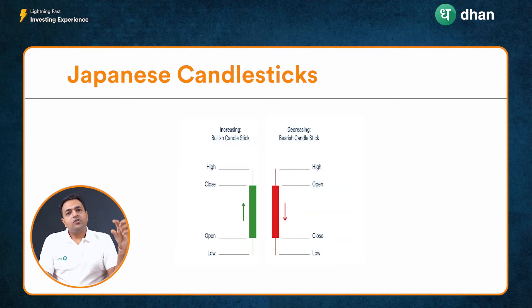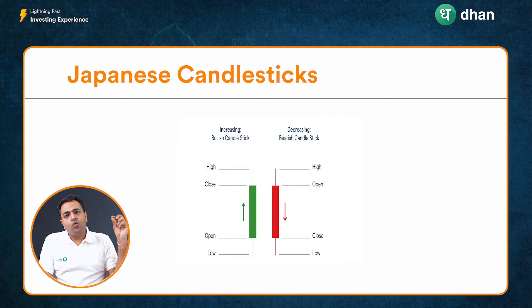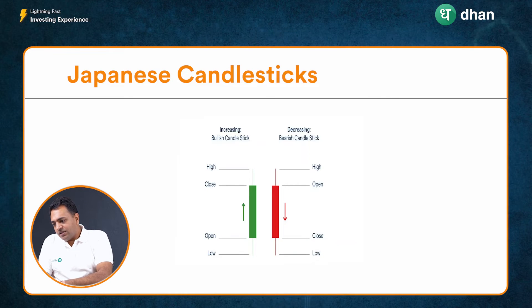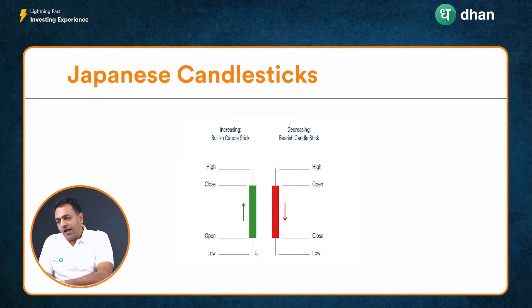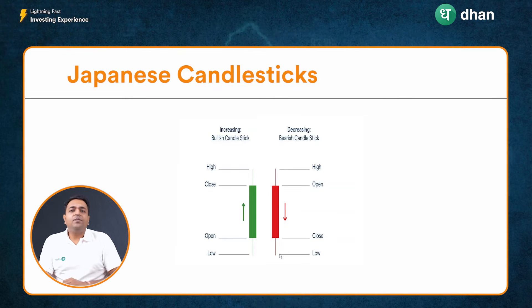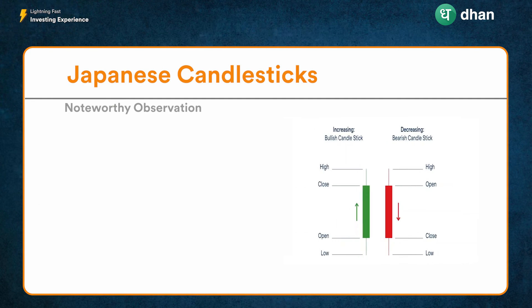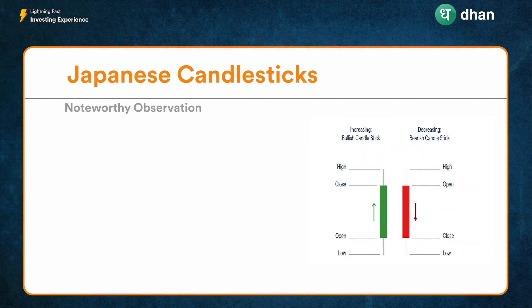Each candle, whether green or red, is accompanied by a wick on the top and a wick on the bottom. The top wick represents the high price point for that day and the lower wick implies the low price point. In a green candle, the open is lower and the close is higher, with the upper wick signifying the day's high and the lower wick signifying the lowest price touched. In a red candle, the open is at a higher level, the close is below the open, and the wicks show the high and low.